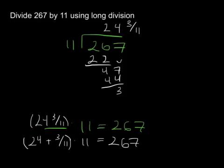And we can see that because 11 times 24 is going to be 264. And then 11 times 3 elevenths, well, the elevenths will cancel, and I'll be left with 3, which is going to give me 267.